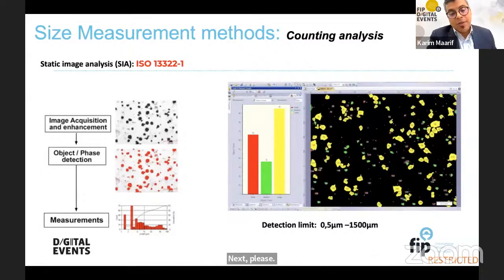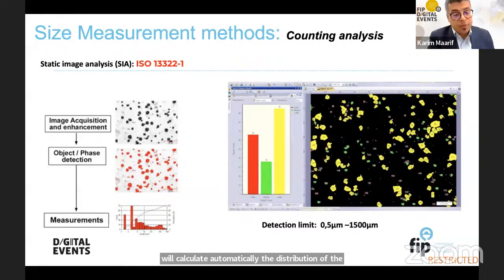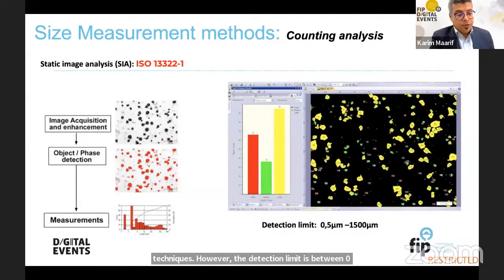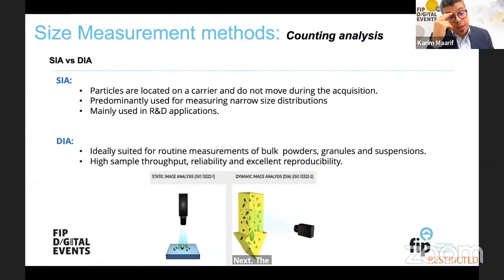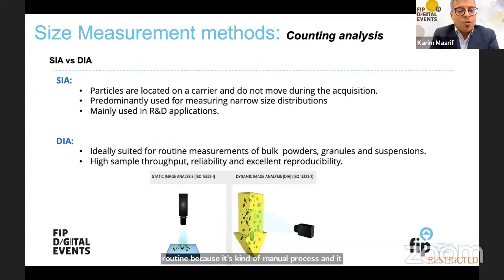For static image analysis, the sample is put on a sample holder and we have two phases: image acquisition and image detection. The computer automatically calculates the distribution and size of particles, and we can also get information about particle shape. The detection limit is between 0.5 to 1,500 micrometers. The difference between static image analysis (SIA) and dynamic image analysis (DIA) is that SIA is mainly used in R&D applications, not routine, as it is a more manual process and concerns narrow distributions.